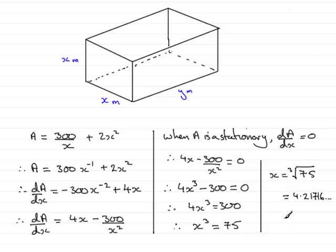Rounding to 1 decimal place gives 4.2. With units of meters, the width and height to make the area stationary would be 4.2 meters.